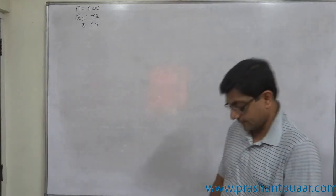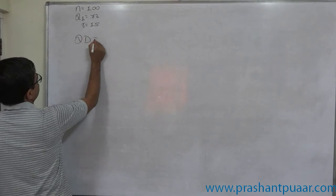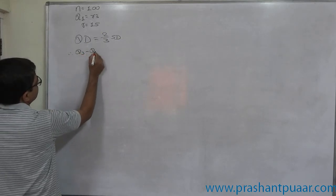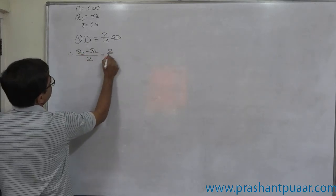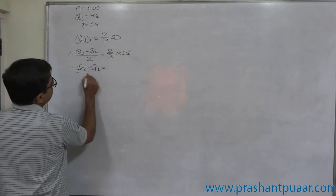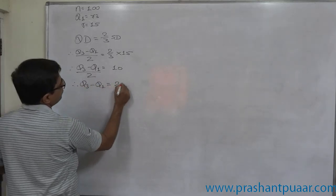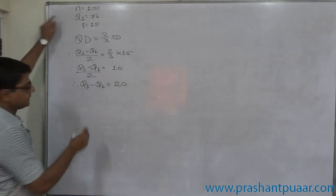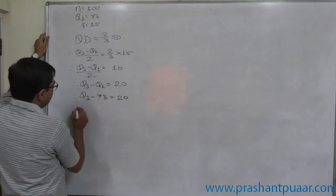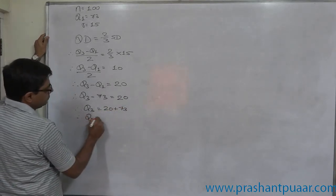On the basis of previous results, we know that quartile deviation equals two-thirds of the standard deviation approximately. That means Q3 minus Q1 divided by 2 equals 2/3 into 15, which equals 10, so Q3 minus Q1 equals 20. Since Q1 is 73, Q3 minus 73 equals 20, therefore Q3 equals 93.